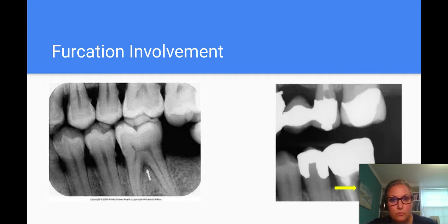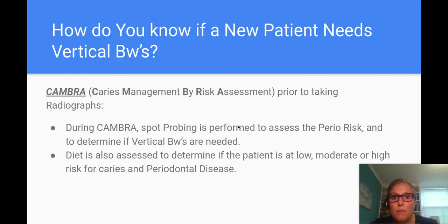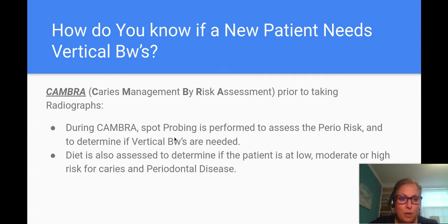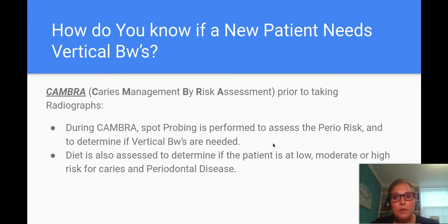So how do you know if a new patient needs vertical bitewings? Well, there's something called CAMBRA — Caries Management By Risk Assessment — performed prior to taking radiographs. In the dental hygiene clinic where I work, students have to do very detailed CAMBRA, which includes spot probing on about six teeth throughout the dentition. It's used to assess perio risk as well as caries risk. If any of the probe readings are five and above, I will have that student take vertical bitewings.